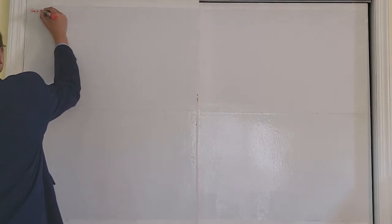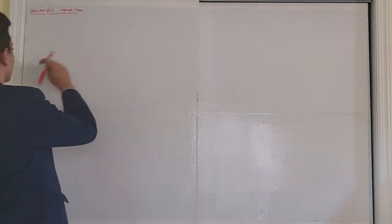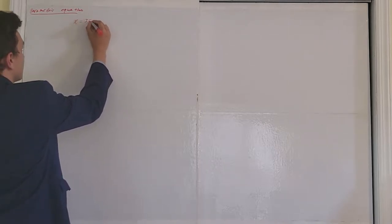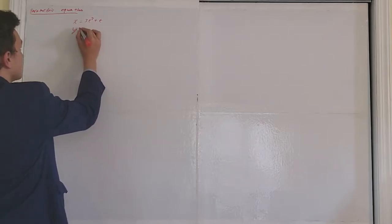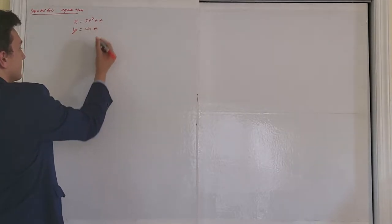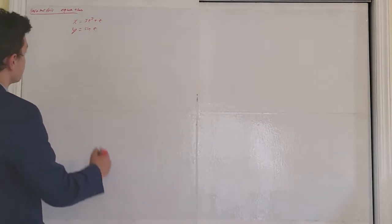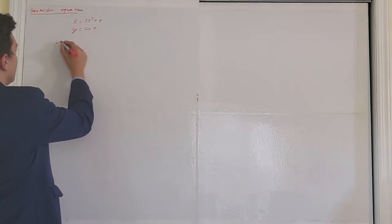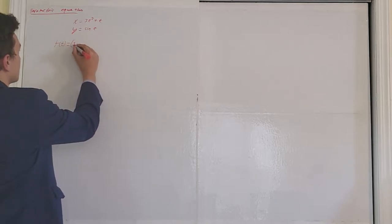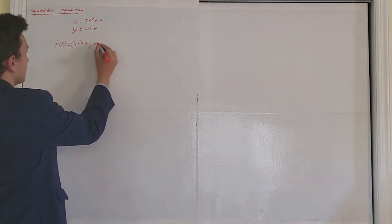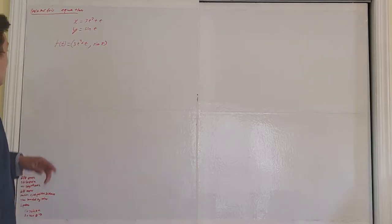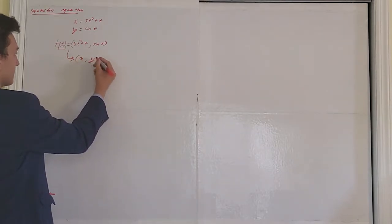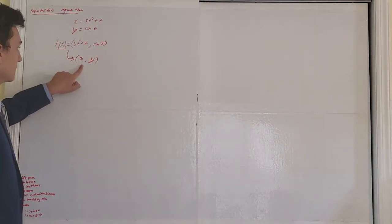What is a parametric equation? A parametric function has an x-coordinate defined as a function of t — let's say 3t squared plus t — and a y-coordinate, y equals sine of t. The entire parametric equation can be written as f of t equals (3t squared plus t, sine of t), so when you plug in a value of t, you get out an x and y-coordinate. It is effectively a function that takes in one input and gives two outputs.